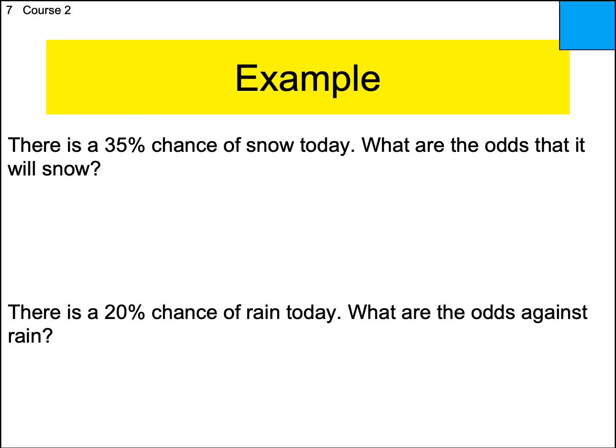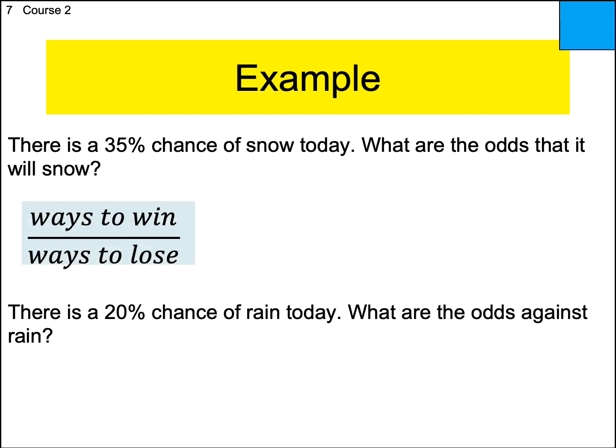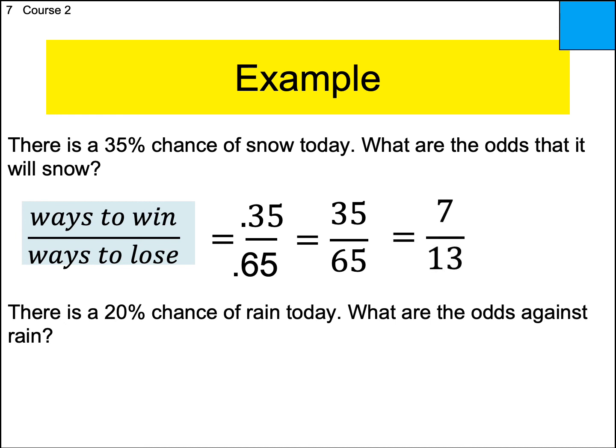There's a 35% chance of snow today — what are the odds that it will snow? Since it doesn't say 'odds against,' it's odds in favor: win over lose. The 35% chance of snow goes on top as 0.35. What's left over from 100%? That's 65%, or 0.65, on the bottom. Multiply top and bottom by 100 to clear the decimals: 35 over 65. Reduce by five: seven over 13. In colon form: seven to 13. Seven chances to snow, 13 chances for no snow — most likely not going to snow today.